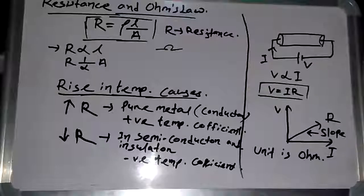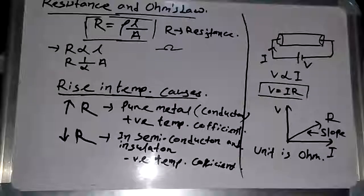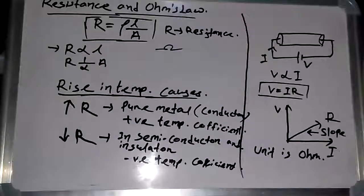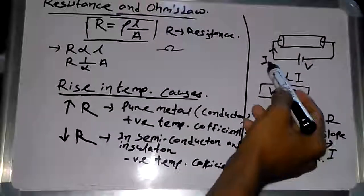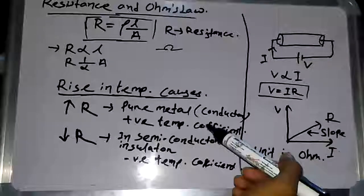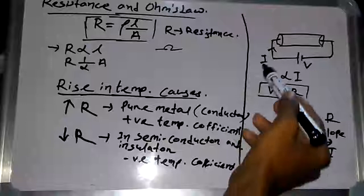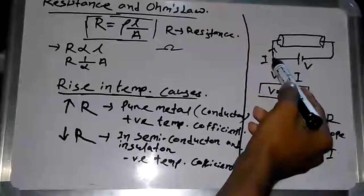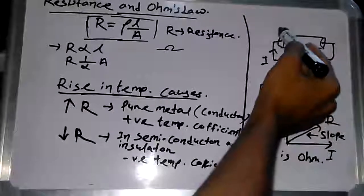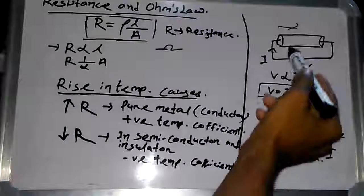Welcome to my channel. Today we are going to learn about resistance and Ohm's law. Resistance may be defined as the property of a substance due to which it opposes the flow of electricity through it. We need current flow to do work, and the property which opposes this flow of current through a conductor is resistance.